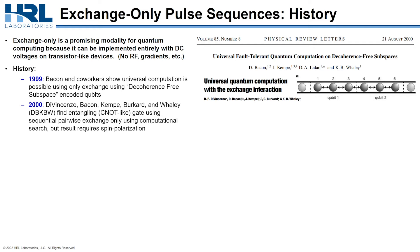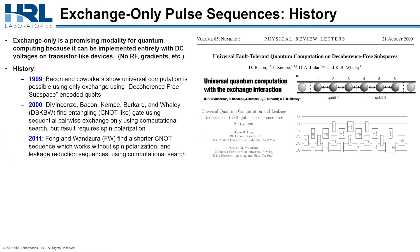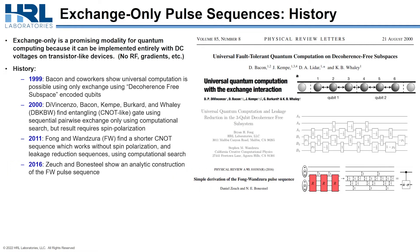That result required some level of spin polarization. About 10 years later, Brian Fong and Steve Wanzura, working out of HRL, found a slightly shorter CNOT sequence, but more importantly, it worked without need for spin polarization. Both of these results were found by computational searching. About five years after the Fong-Wanzura result, Zeuch and Bonesteel showed how you could understand that Fong-Wanzura sequence through pulse analytics, which was very inspirational.